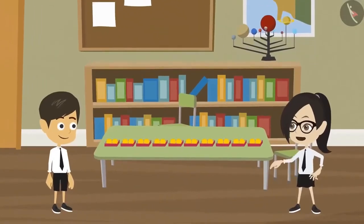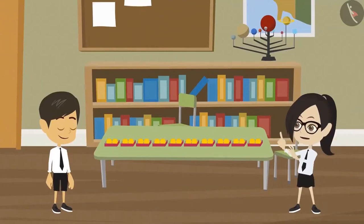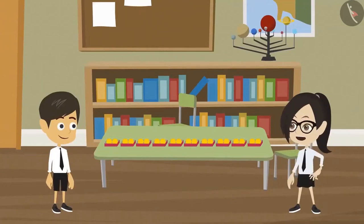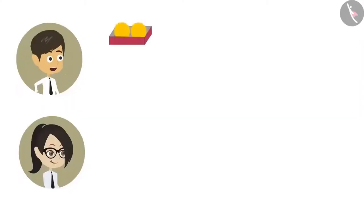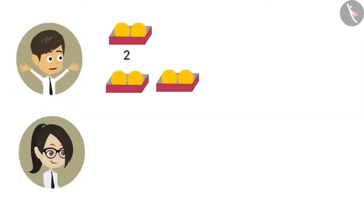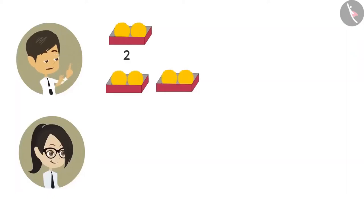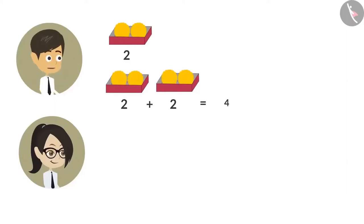Now look, there are 10 boxes. Each box has two ladoos. So let's count the ladoos in the boxes. Each box has two ladoos. To know the ladoos in two boxes, we have to add two, two times. So the answer is four. Which means there are four ladoos in two boxes.